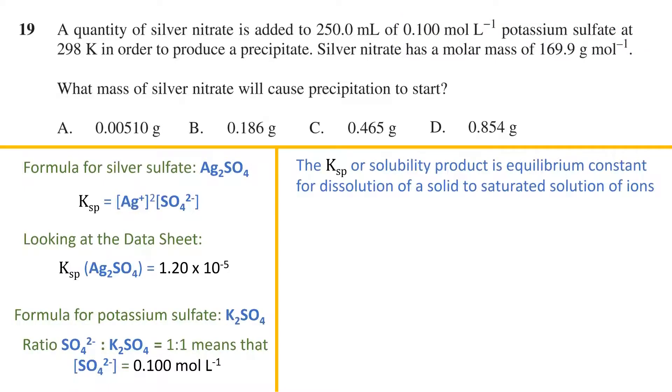Now we know that the Ksp or solubility product is the equilibrium constant for the reversible reaction of the dissolution of a solid into a saturated solution of its ions. However we can interpret this reversible reaction in the opposite direction as well where it tells us when the ions would just start to form a precipitate.